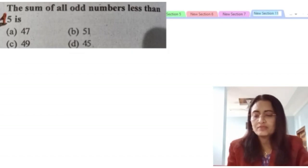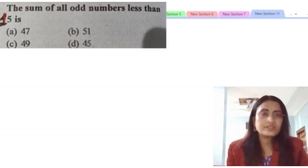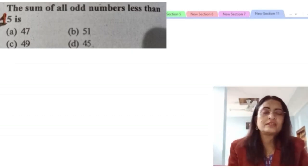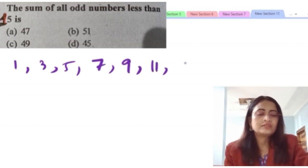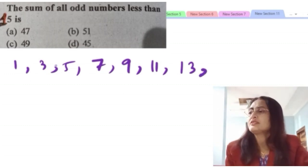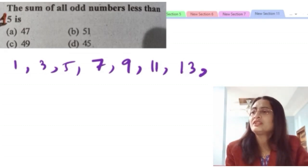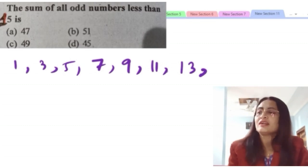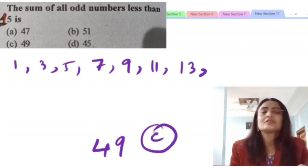Next question: the sum of all odd numbers less than 15. Options are given. Odd numbers less than 15 are: 1, 3, 5, 7, 9, 11, 13. Adding them: 1+3=4, 4+5=9, 9+7=16, 16+9=25, 25+11=36, 36+13=49. So 49 is the answer. Option C is the correct option.